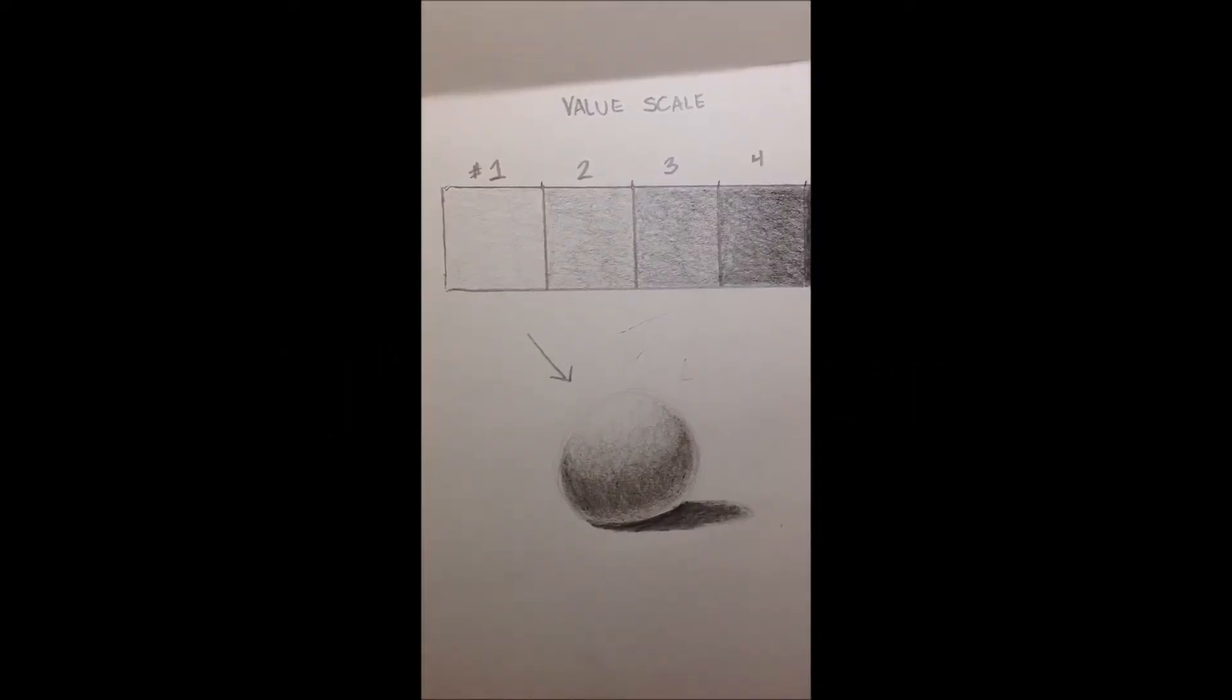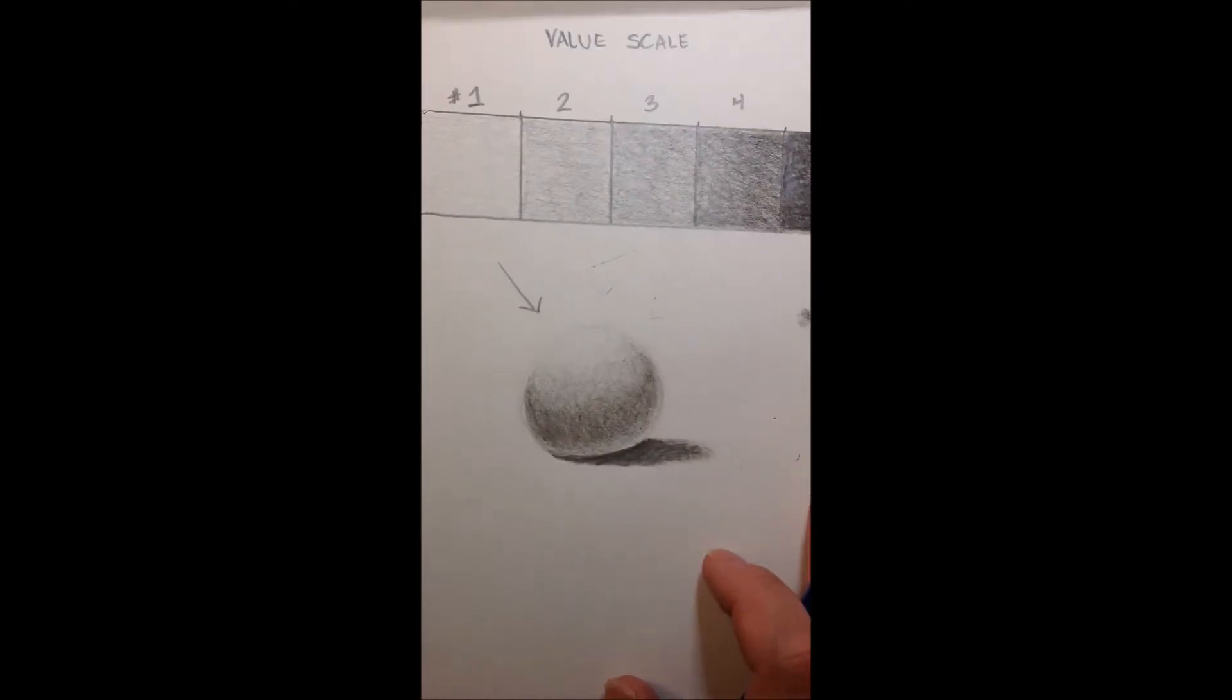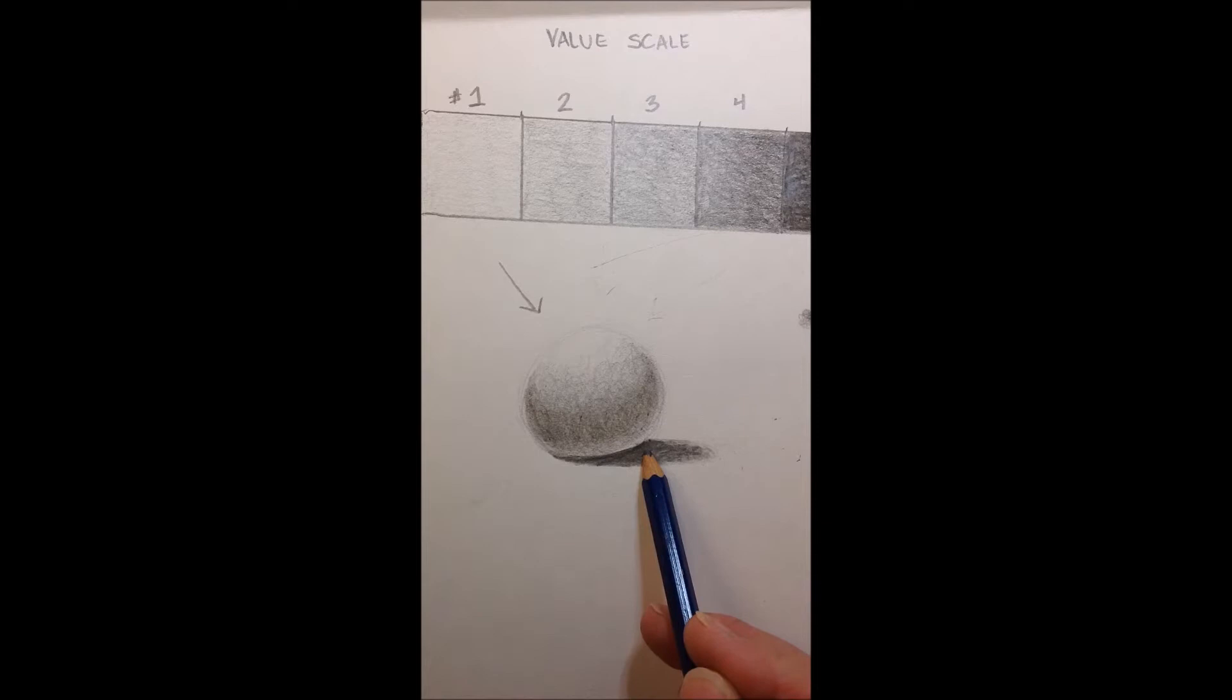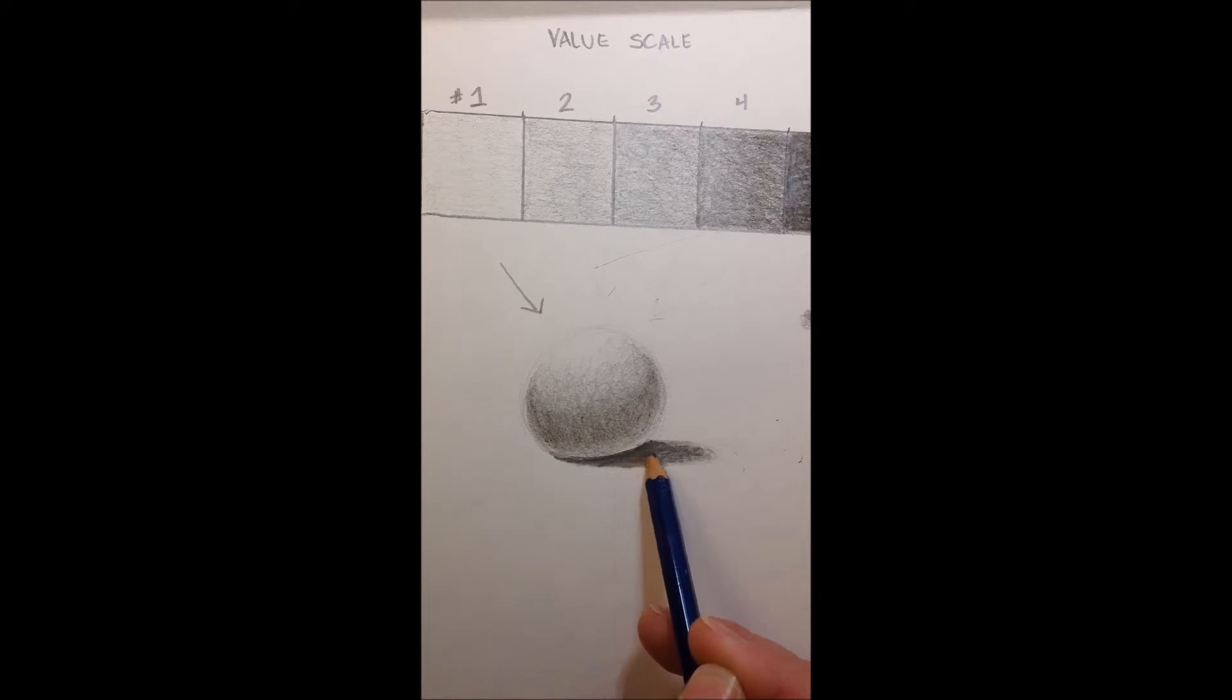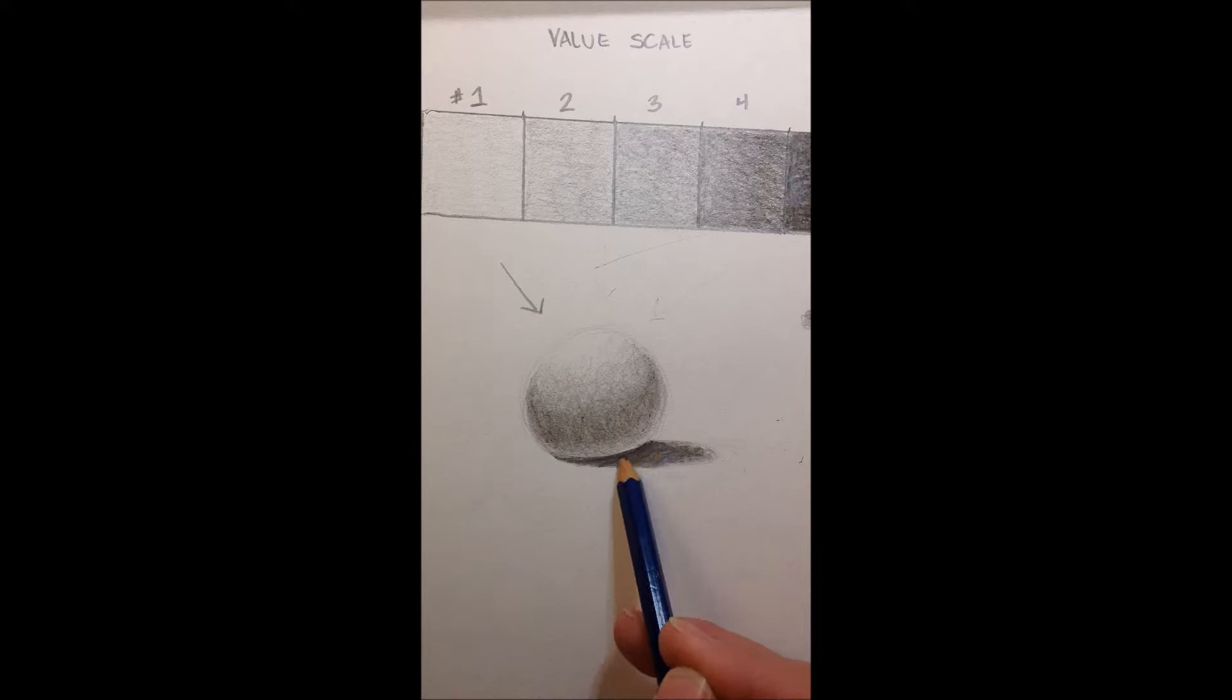If you guys are having difficulties, what I'm noticing as I'm walking around is a lot of you, your cast shadow and your sphere kind of blend into one. You want to make sure that your cast shadow is very dark right underneath your shape, and that as it goes to the side it kind of fades out a bit. But it's very dark, especially right underneath. That'll show the difference between the shape and the shadow.